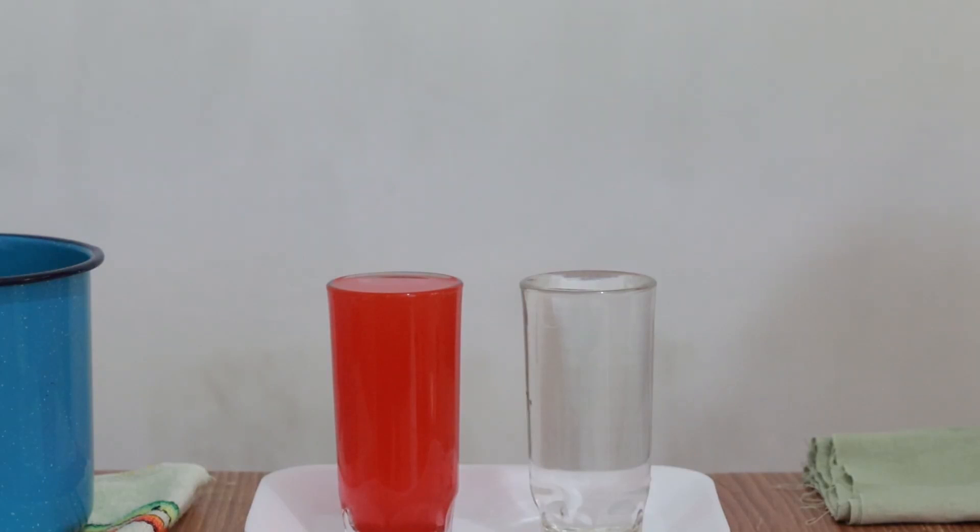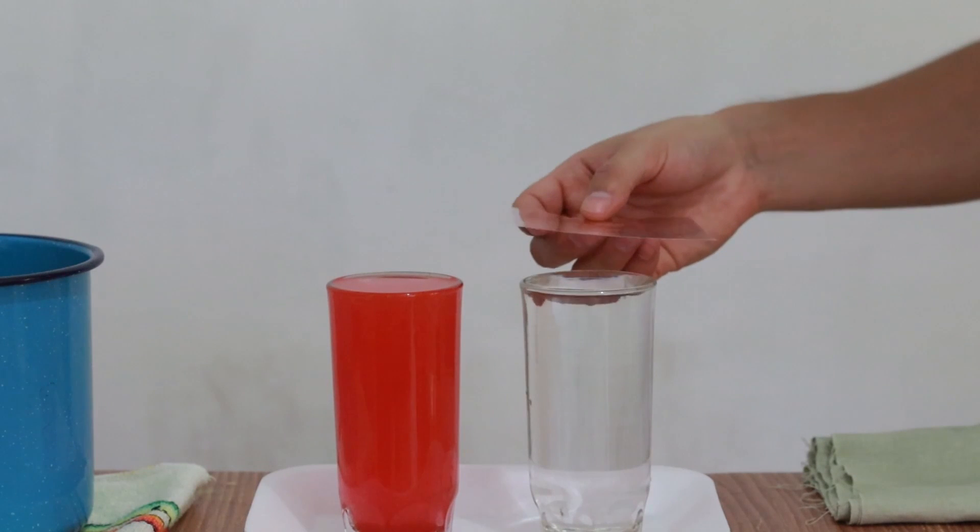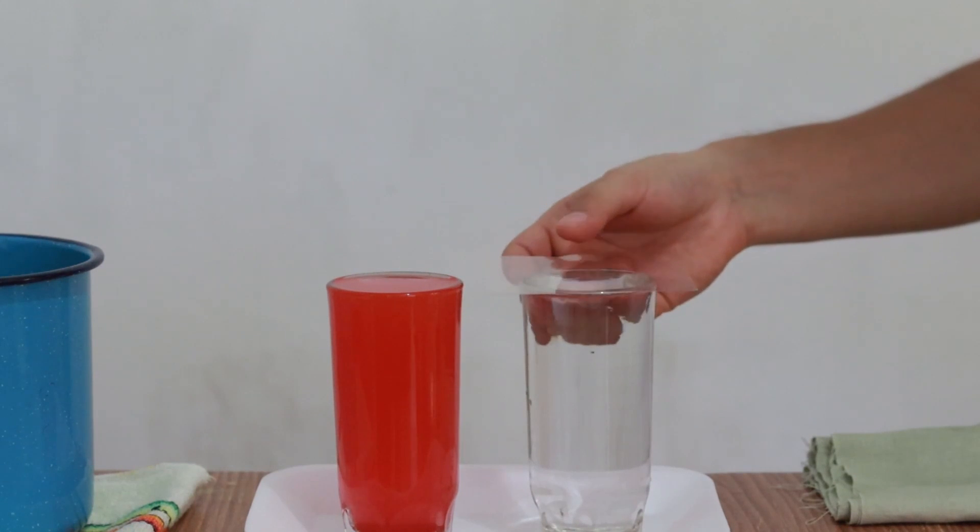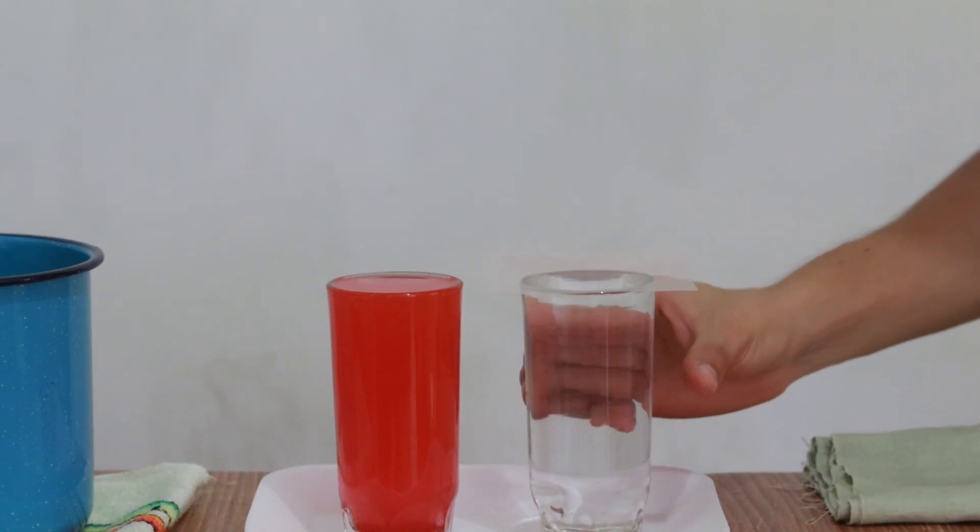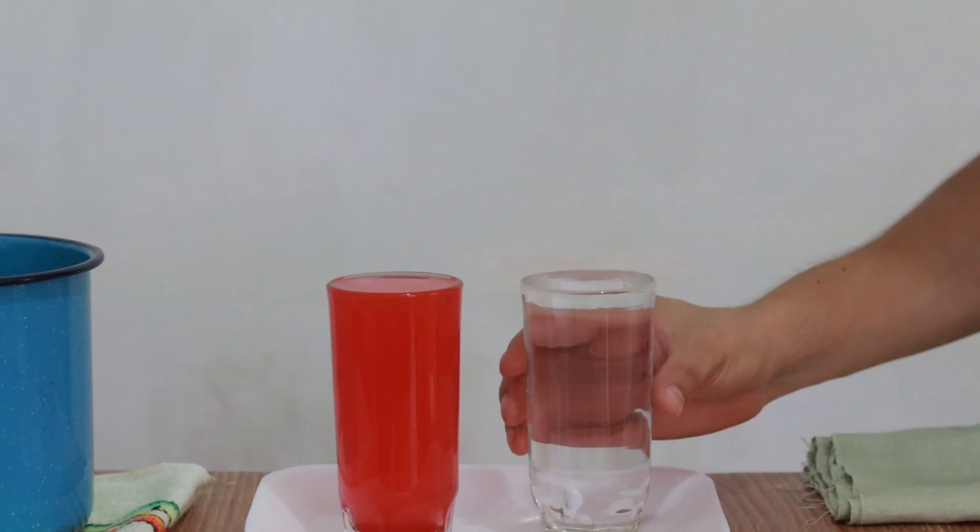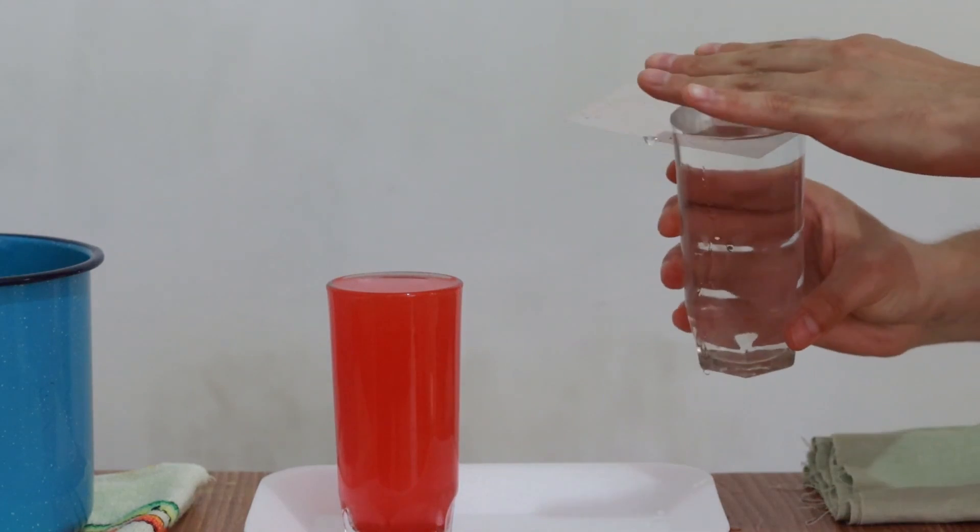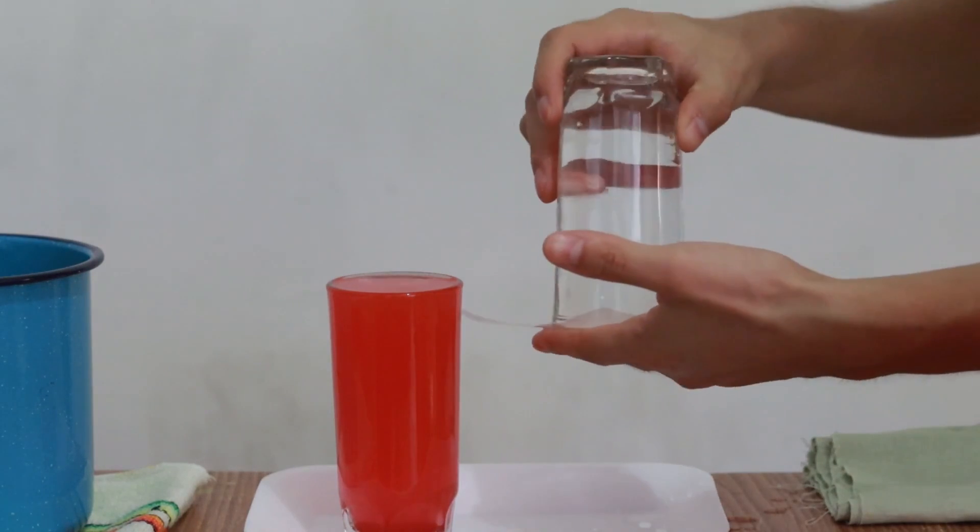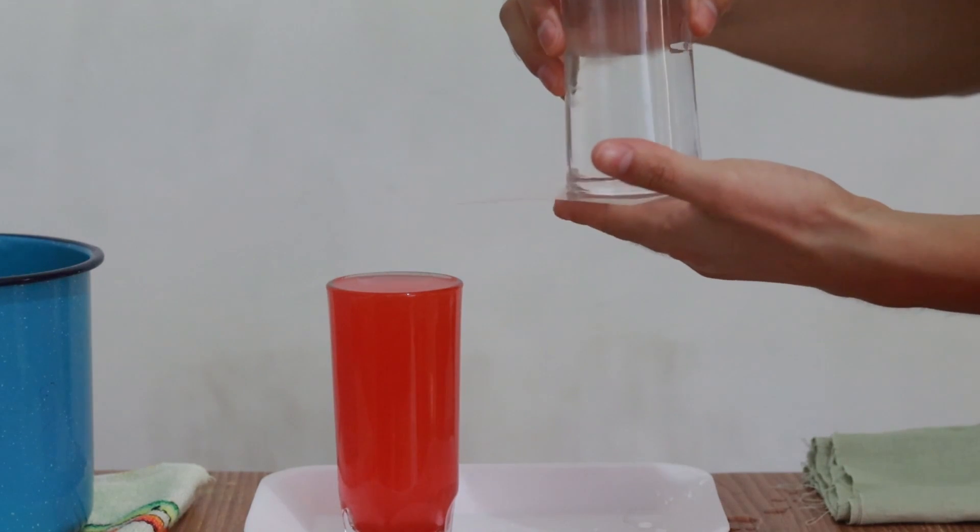Now we are going to place the plastic square over the mouth of the glass with cold water. Very carefully we turn the glass and place it on the glass of hot water.